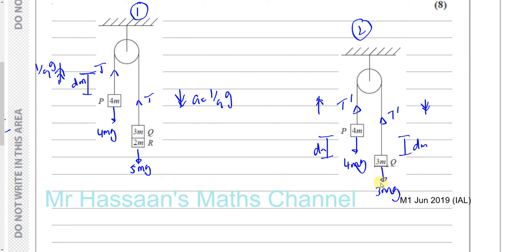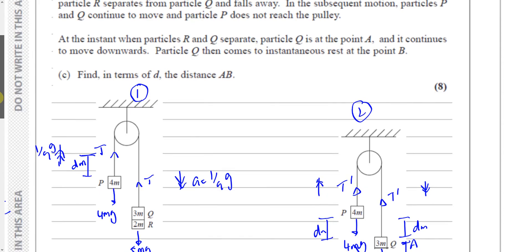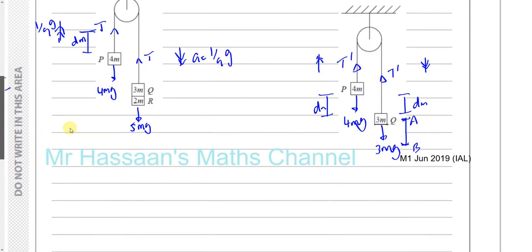So we need to know that distance that Q falls. Point A is where R separates, and point B is where Q comes to instantaneous rest after R separates. We've got to find the distance between A and B in terms of D. Let's call it X — the distance that it moves under the new acceleration, which is exactly the same distance that P moves under the new acceleration, since they're connected together.